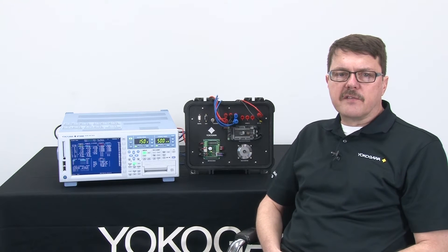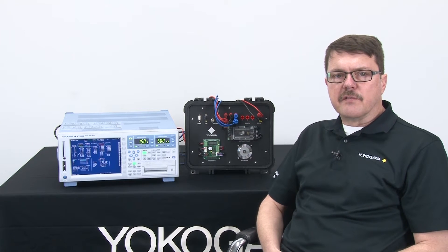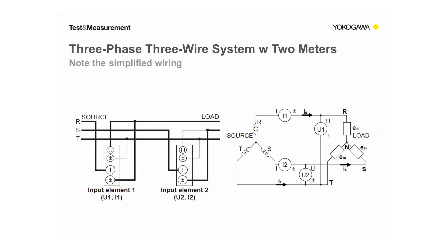Last I will discuss the pros and cons of the two wattmeter method and discuss when you should consider using the three wattmeter method. Okay, here is the three-phase three-wire system. The AC source is depicted on the left hand side, the load is on the right hand side.